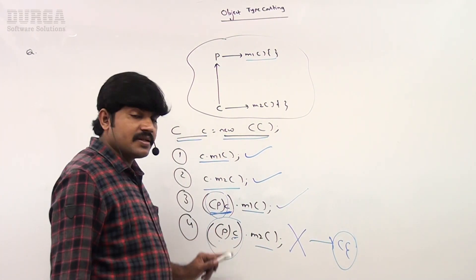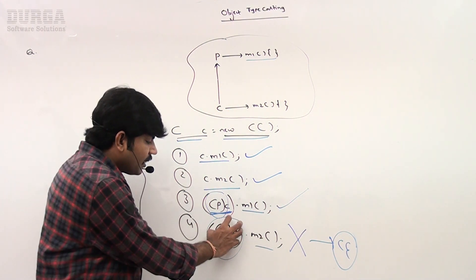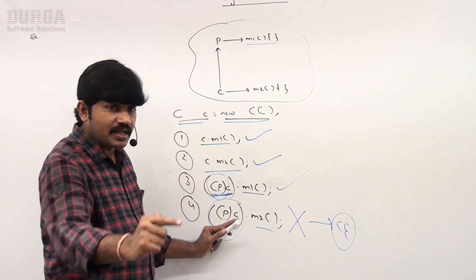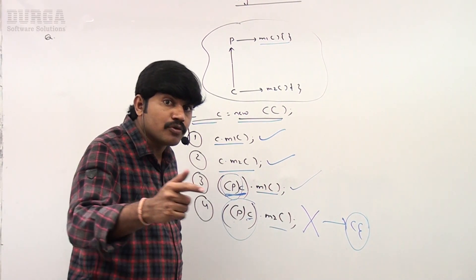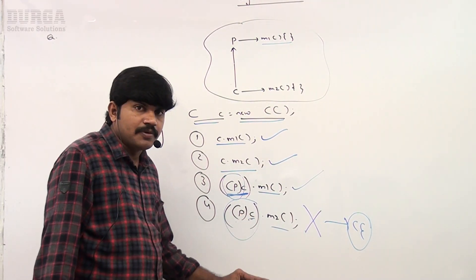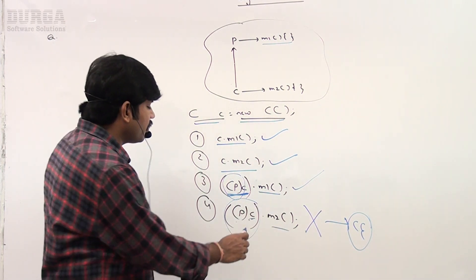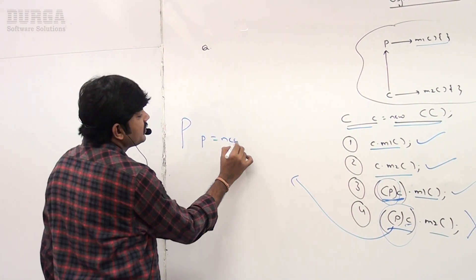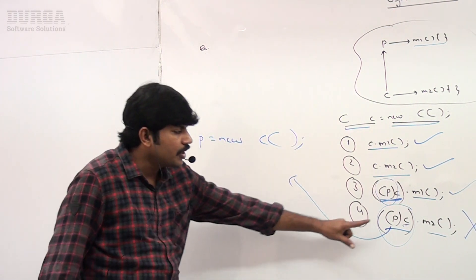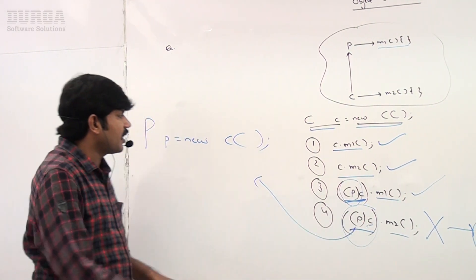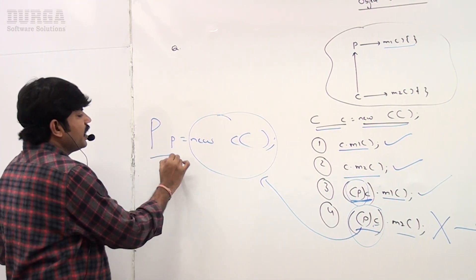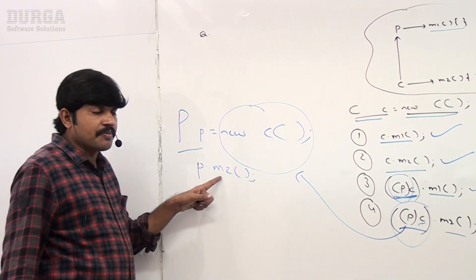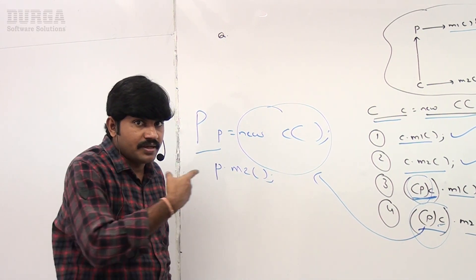Remember: parent reference can be used to hold a child class object. Internally, whenever you typecast to P type, the reference type becomes parent type. On the parent type, how can you call a child-specific method? Even though the internal object is child type, you will immediately get an error. This is equivalent to: Parent P = new Child(); calling a child-specific method on P gives a compile error.